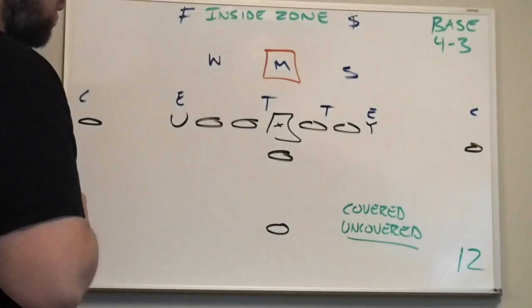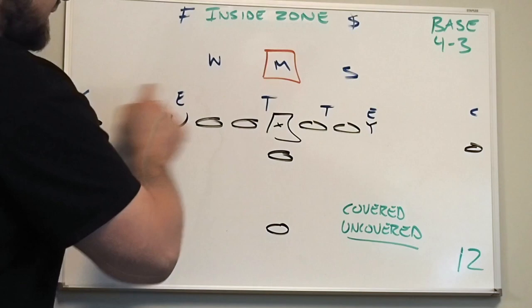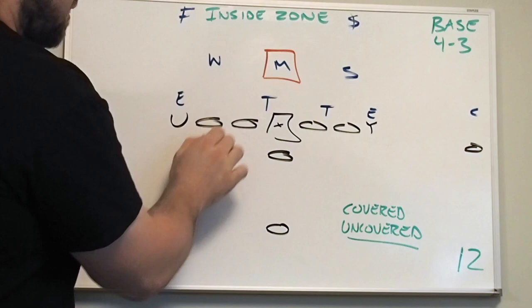We're going to start here with the center and the left guard's block on this defensive tackle right here. Their assignment will be to block the mike linebacker and the defensive tackle. Their technique will depend on where this defensive tackle is aligned.